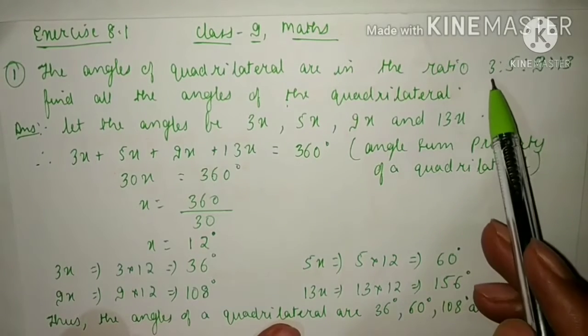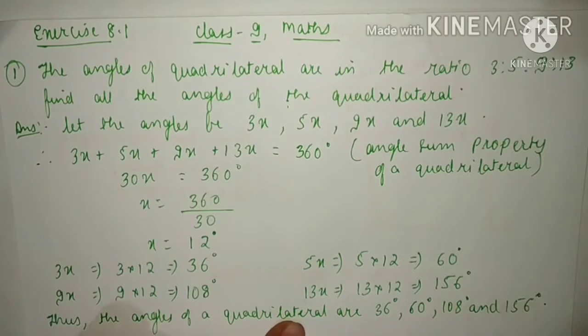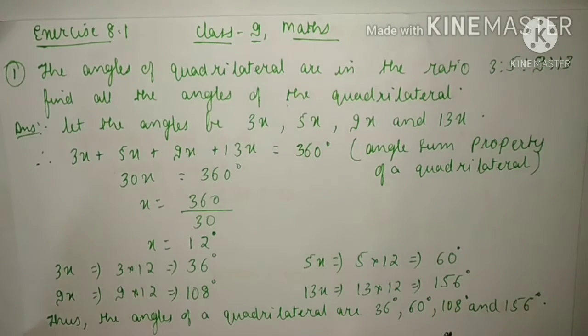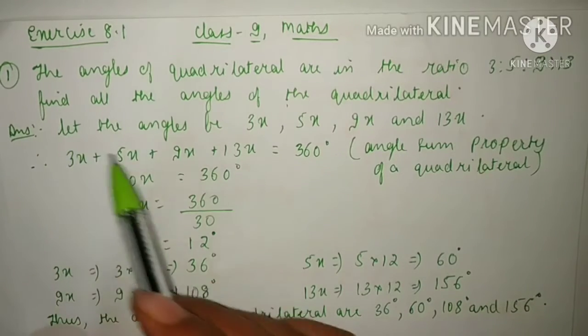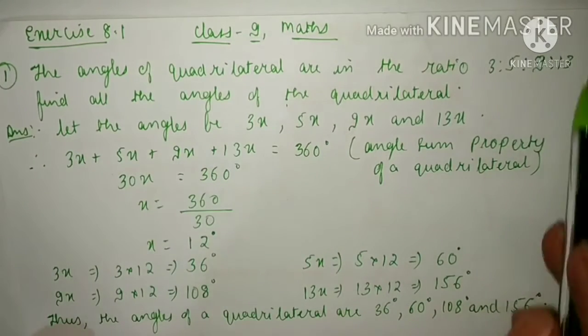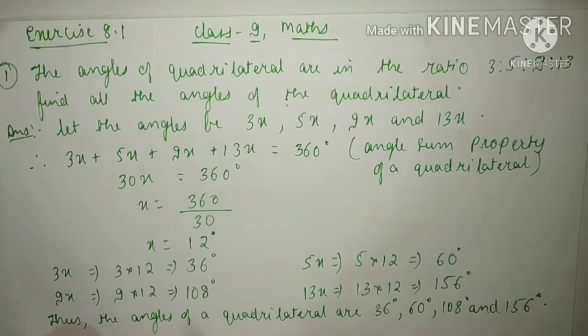In this question, the ratios of the angles are given and we have to find the value of each angle. Let the angles be 3x, 5x, 9x, and 13x.